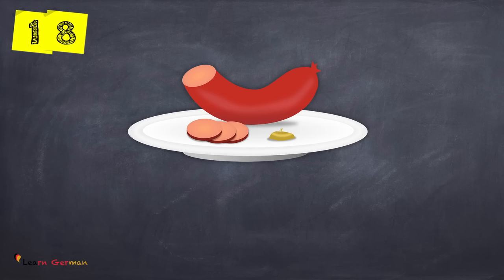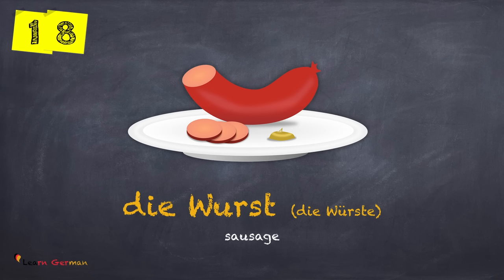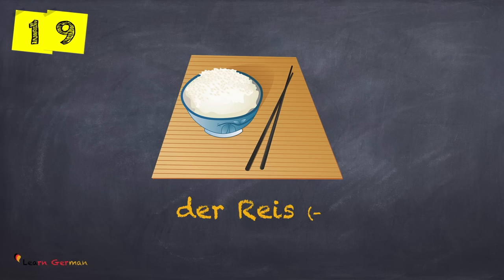die Wurst, die Würste — once again, die Wurst, die Würste. der Reis — once again, der Reis. Even for Reis, you only use the singular form since there is no plural.